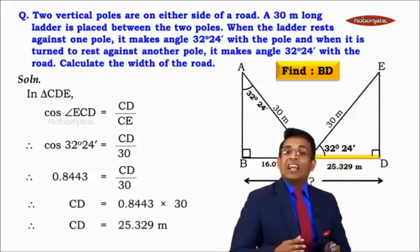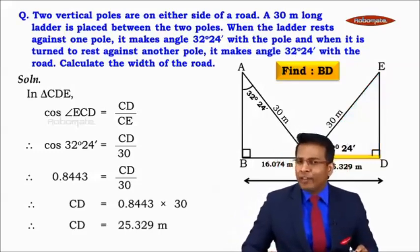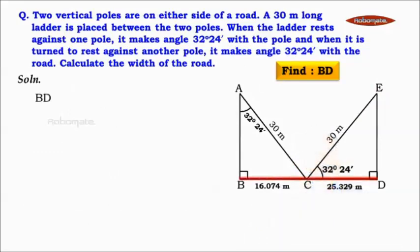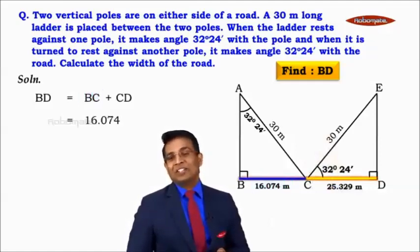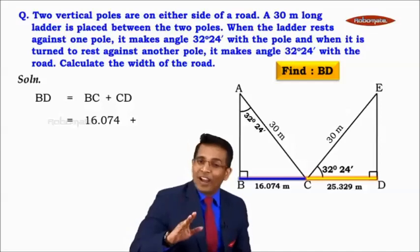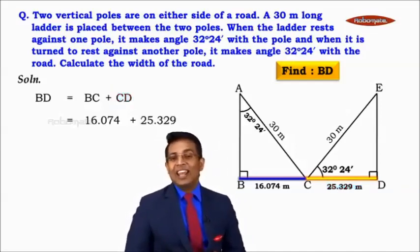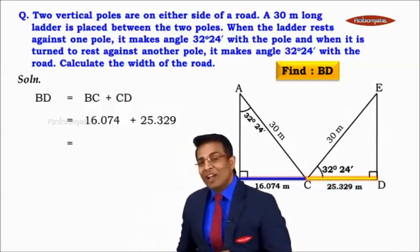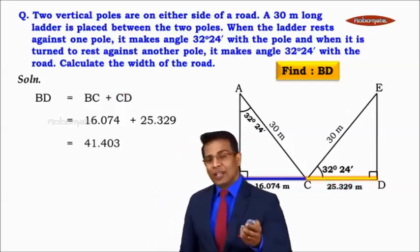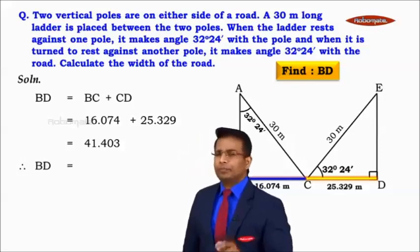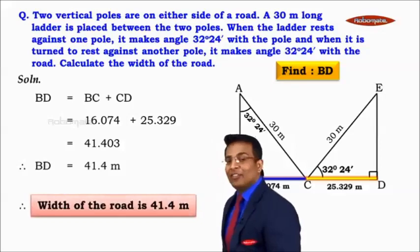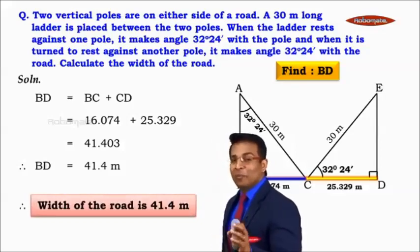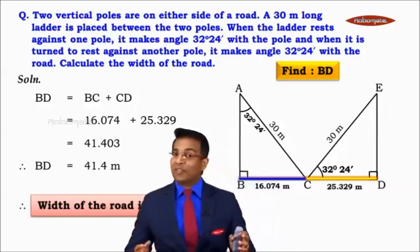Now it's easy to find BD. BD = BC + CD = 16.074 + 25.329 = 41.403 meters. Rounding off, BD ≈ 41.4 meters. So the width of the road is 41.4 meters. A very important sum, but a very simple one!